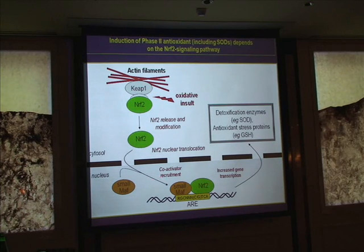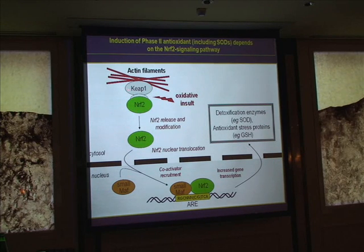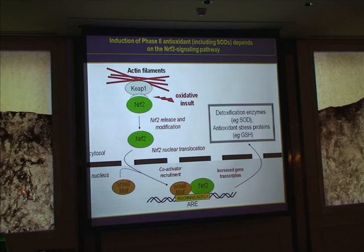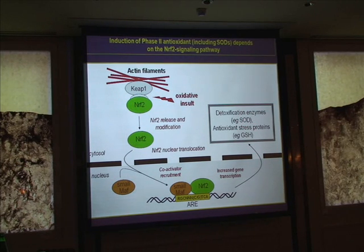Under basal conditions, NRF2 is present in the cytosol, bound to actin filaments. When there is an oxidative insult, NRF2 is released from the actin filaments, translocates to the nucleus, binds the SOD gene, and increases transcription of the SOD protein. We therefore concluded that in cells with low frataxin, this NRF2 system may not be functional.